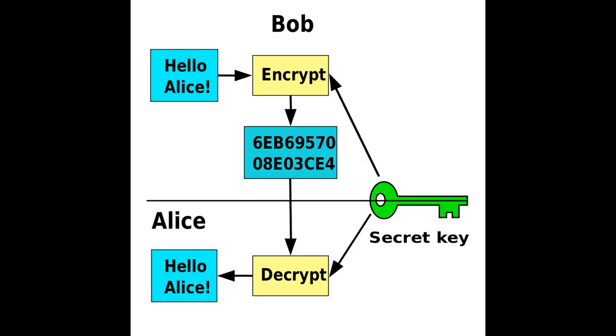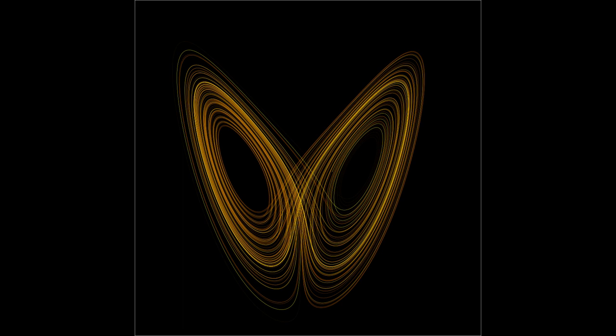Before the mid-1970s, all cipher systems used symmetric key algorithms, in which the same cryptographic key is used with the underlying algorithm by both the sender and the recipient, who must both keep it secret. The key in every such system had to be exchanged between the communicating parties in some secure way prior to any use of the system — a secure channel.